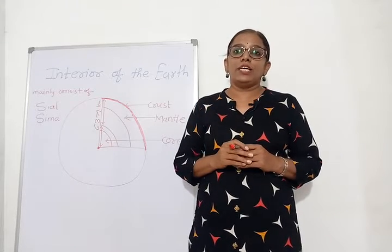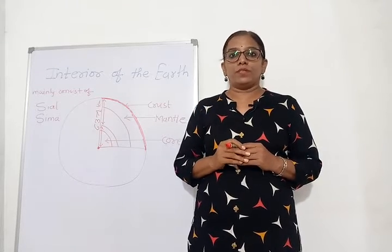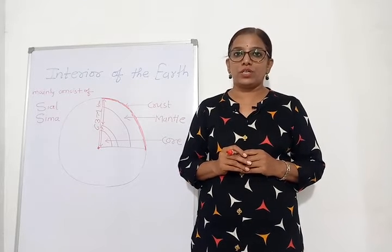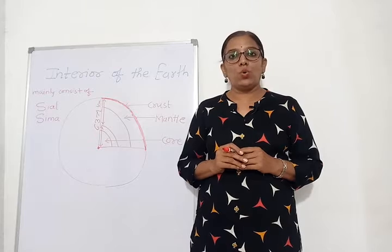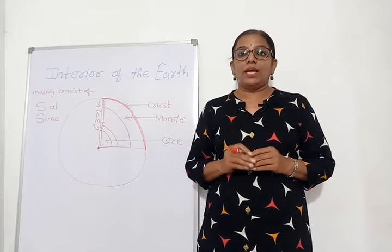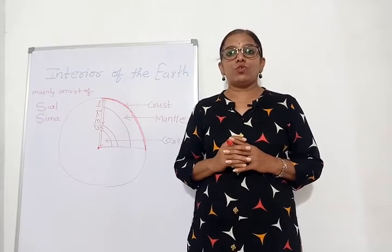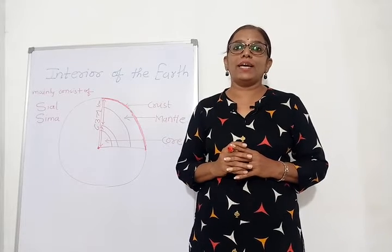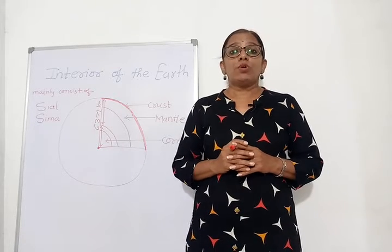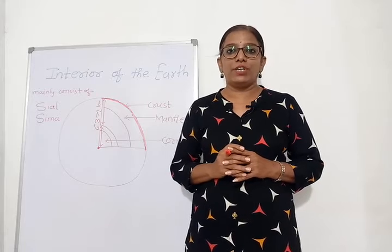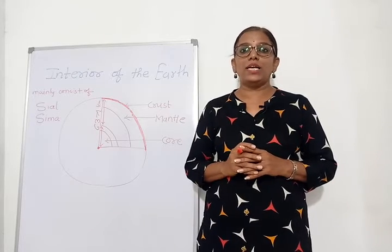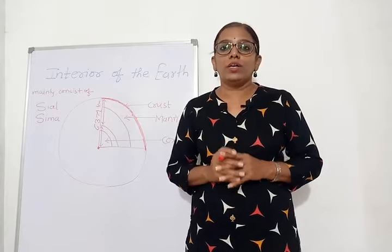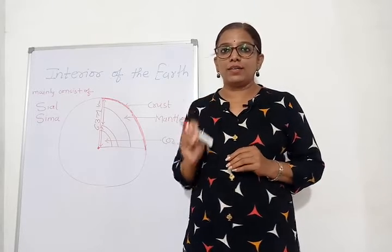The crust is divided into two types: continental crust and oceanic crust. All of you know the bifurcation of land and water on earth — that is 29% land and 71% water. The solid land, the 29% land that is on earth, is called the continental crust.